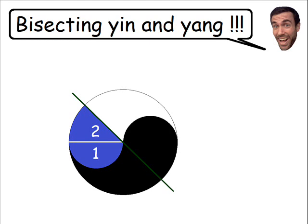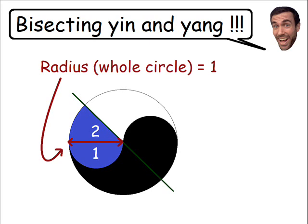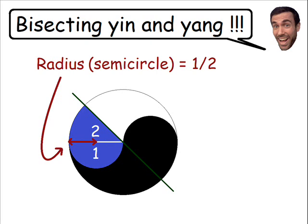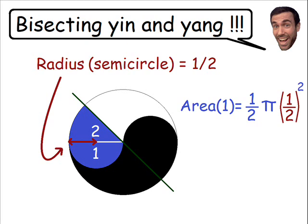To make all calculations as simple as possible, let's say the radius of the whole circle has a value of one, which means the radius of the semi-circle in section one would have a value of one half. We can assume this using the properties of radius and diameter. Using this information, we can find the area of section one using the formula of a semi-circle, which is one half pi r squared. With r equal to one half, the area of section one simplifies to one eighth times pi.